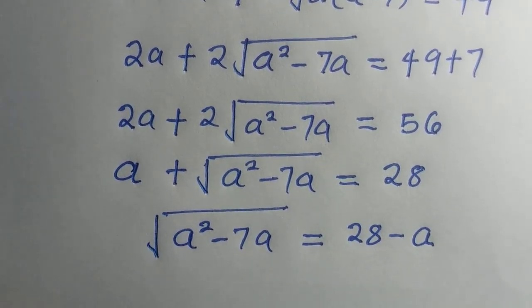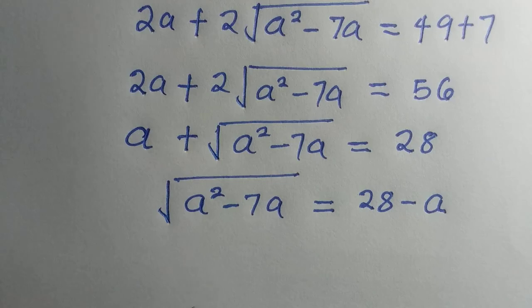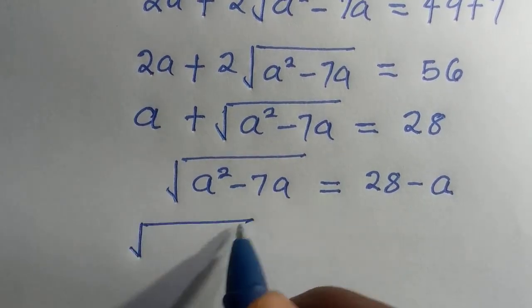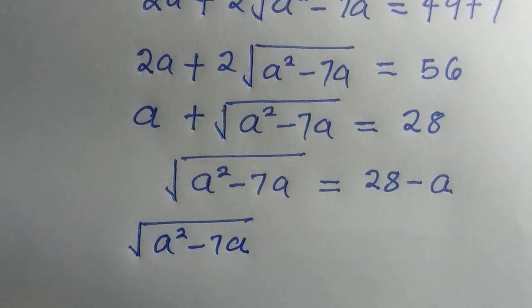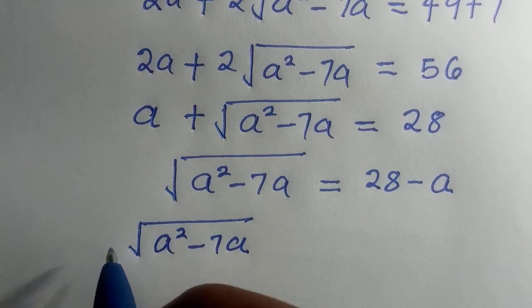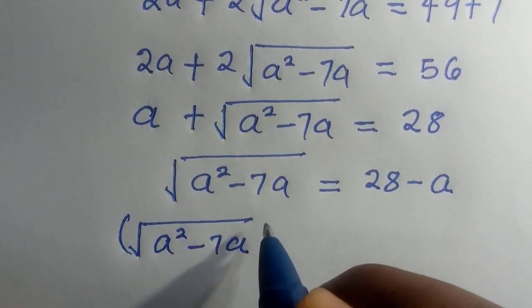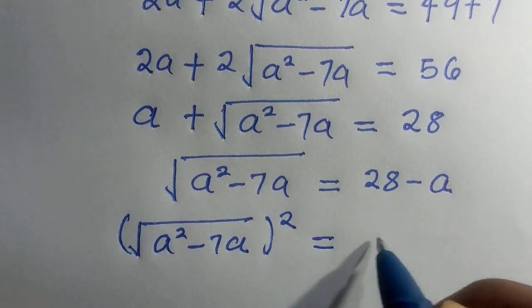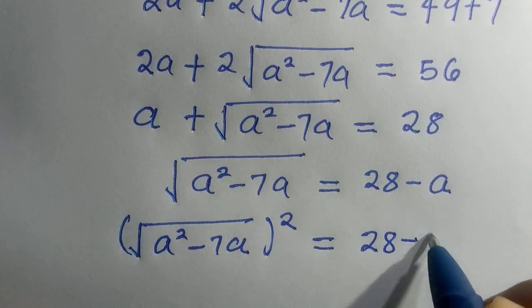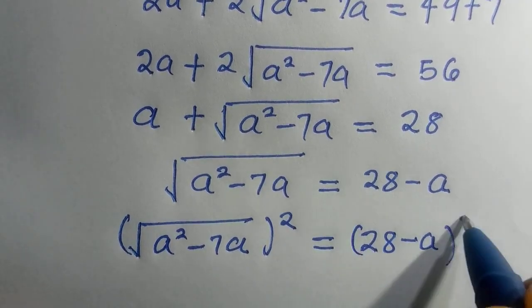So next, we take [√(a²-7a)]² equals (28-a)².